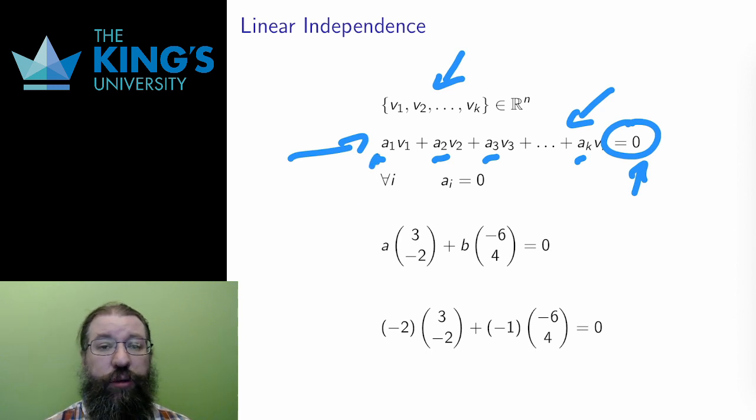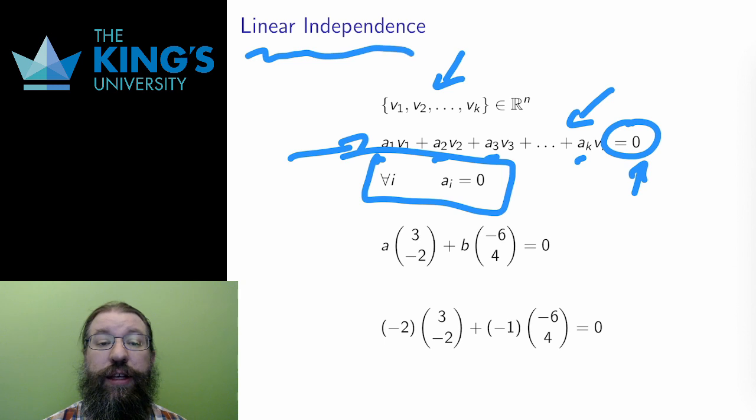This equation always has one solution. I can just set all the ai to zero. Then the left side is just adding the zero vector a bunch of times, and the result is still the zero vector. The set of vectors v1 to vk is called linearly independent if this solution, all the ai are zero, is the only solution. That is, if there is no way to scale and add the vectors together to get zero vector other than this trivial way. That is linearly independent, and a set of vectors is called linearly dependent if it is not linearly independent, sensibly. This is pretty hard to parse, so here is an example.